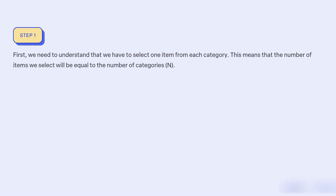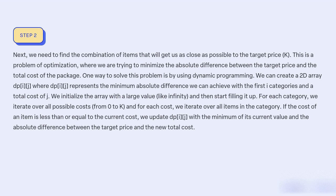First, we need to understand that we have to select one item from each category. This means that the number of items we select will be equal to the number of categories. Next, we need to find the combination of items that will get us as close as possible to the target price K. This is a problem of optimisation, where we are trying to minimise the absolute difference between the target price and the total cost of the package.